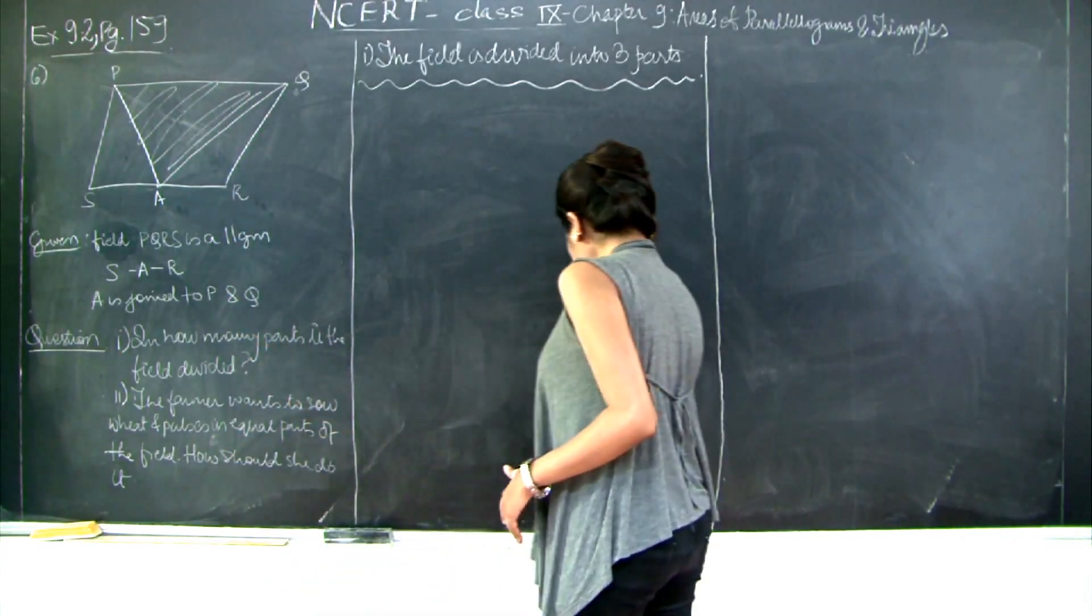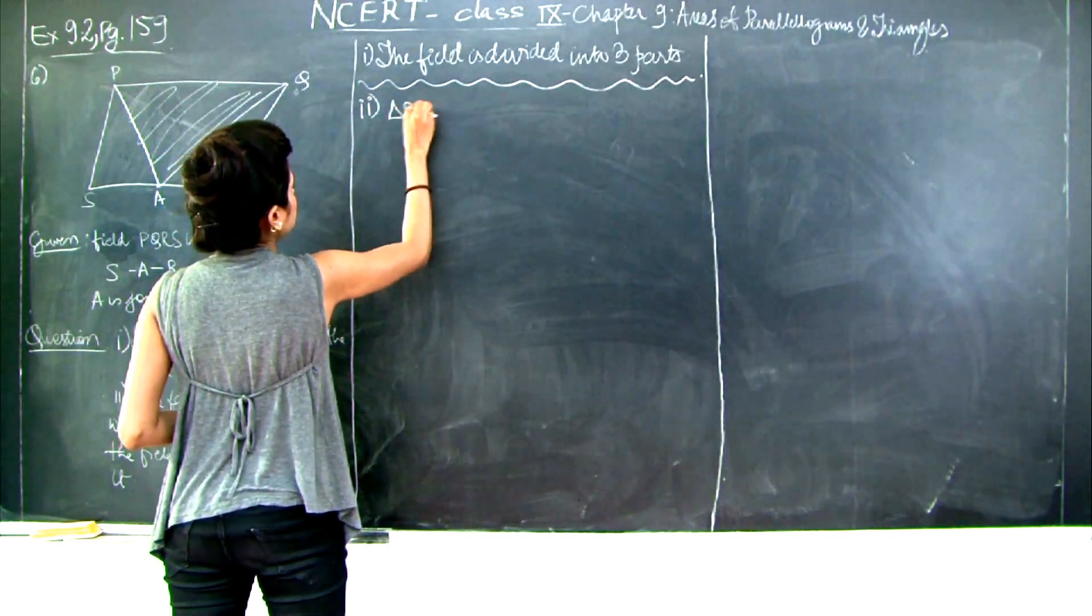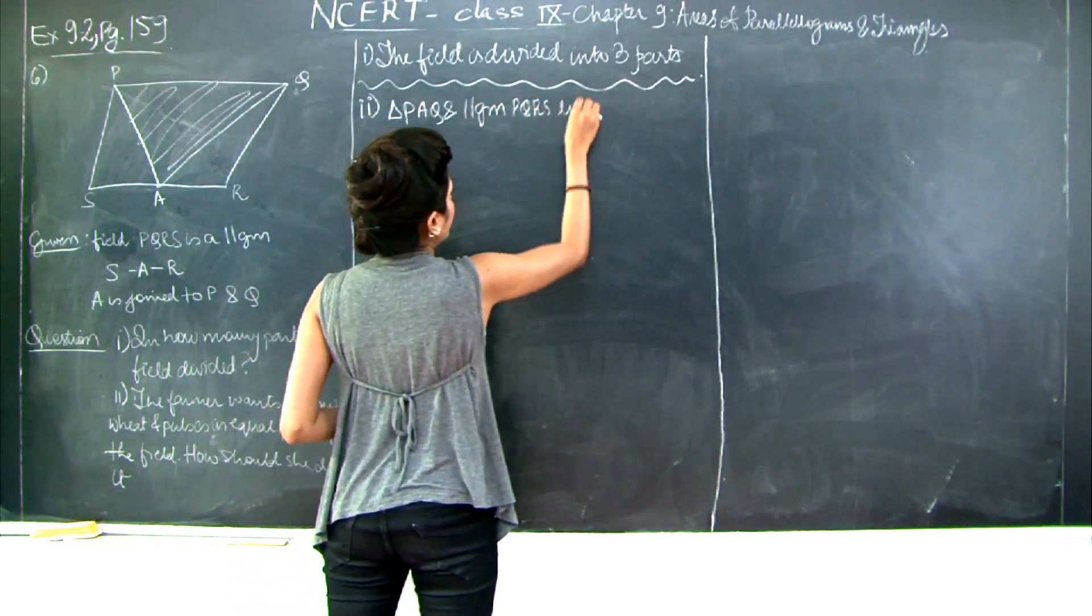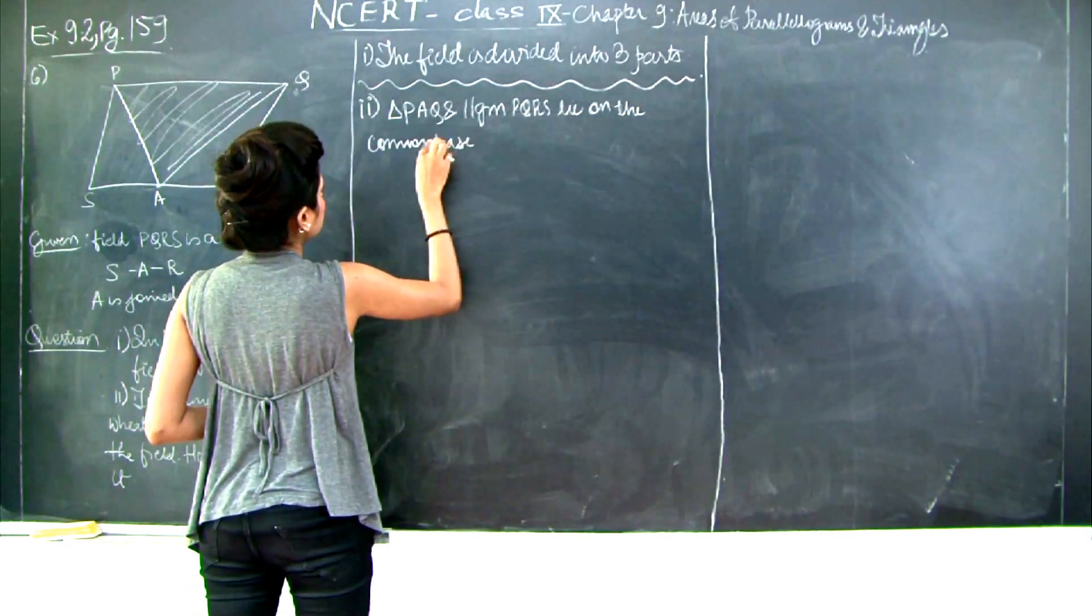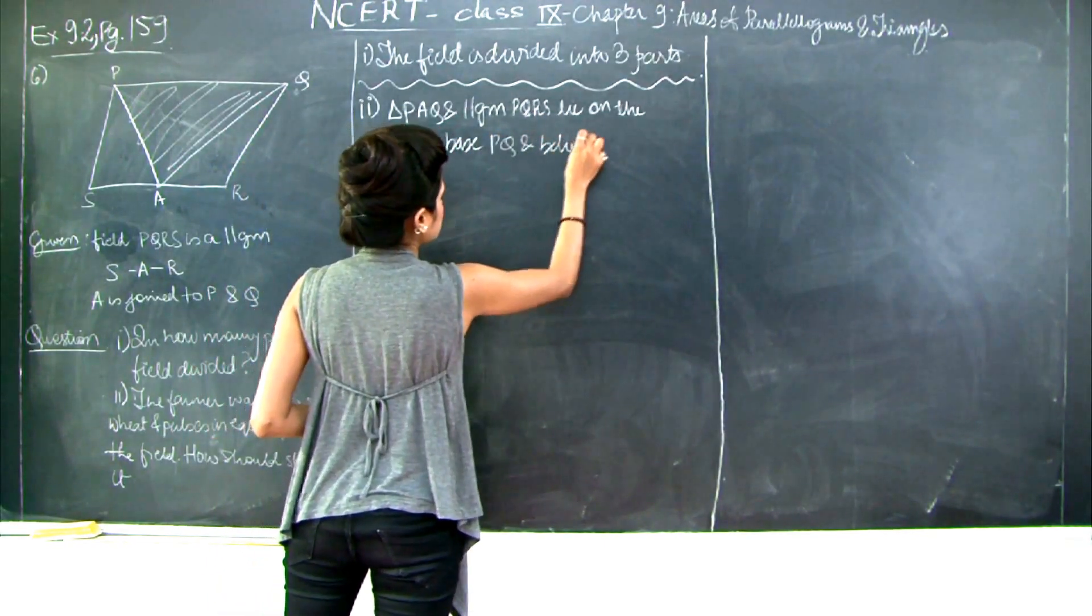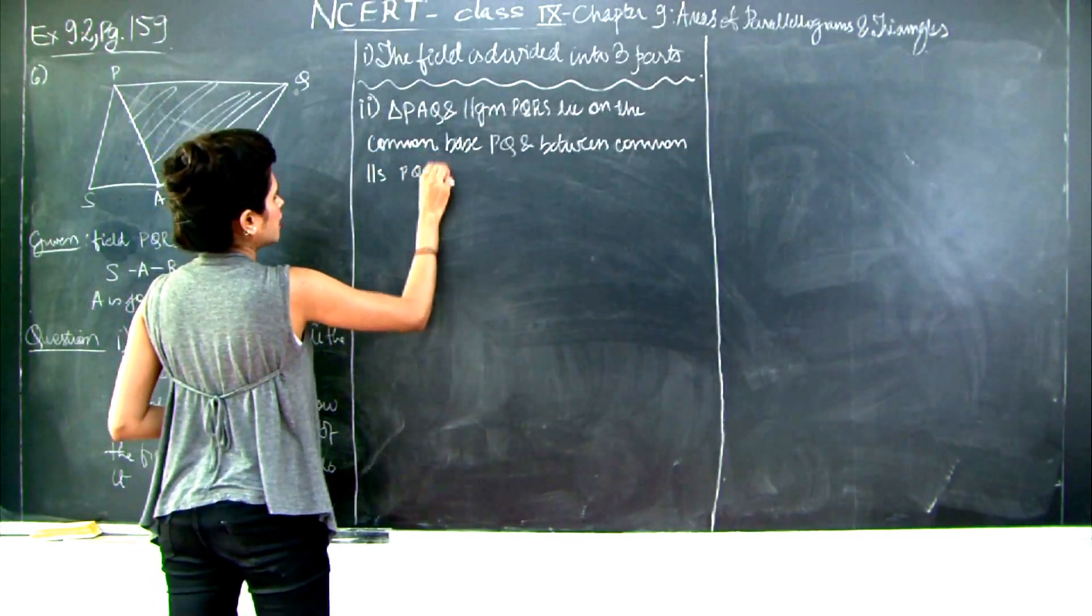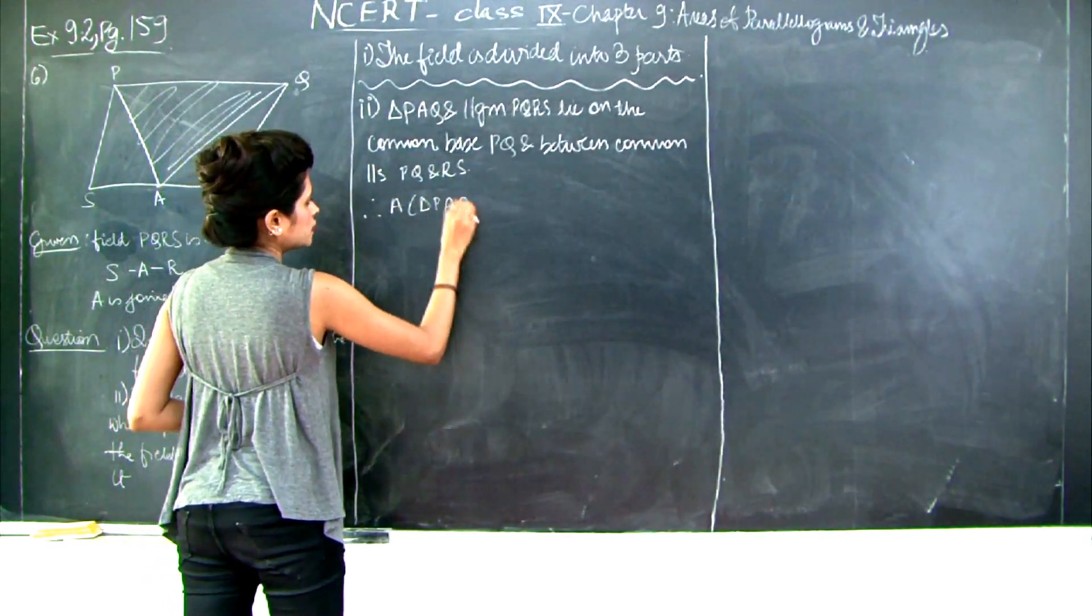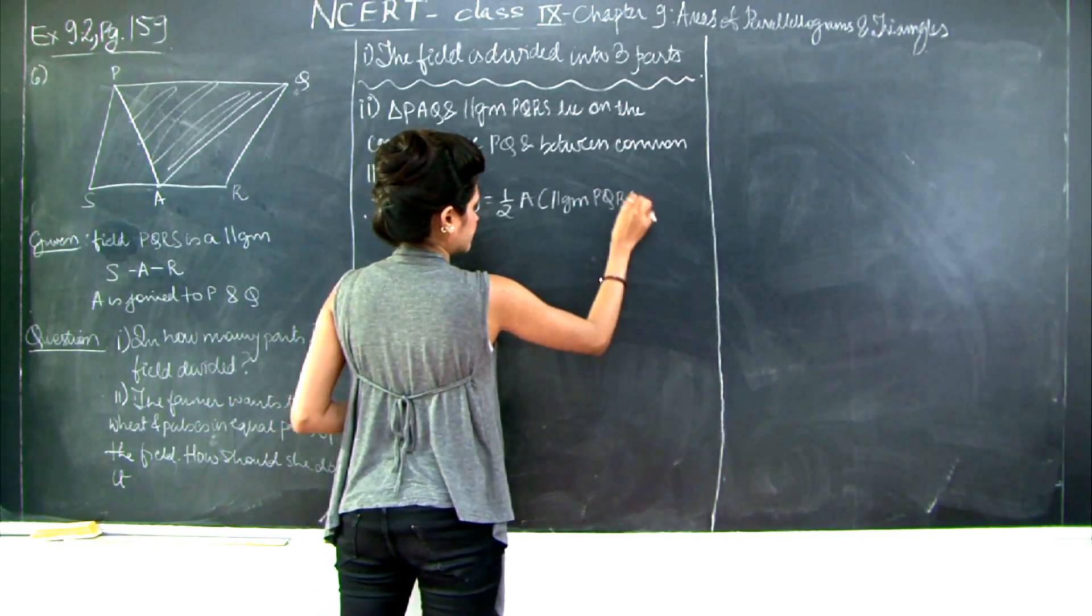Let's solve this. Now triangle PAQ and parallelogram PQRS lie on the common base PQ and between common parallels PQ and RS. Therefore area of triangle PAQ is equal to half area of parallelogram PQRS. I'll mark this as equation 1.